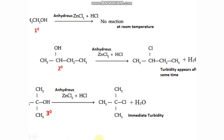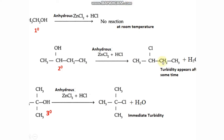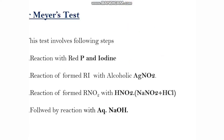So this is one of the tests used for distinguishing primary, secondary and tertiary alcohols. Next is Victor Meyer's test. Victor Meyer's test is based on the difference in behavior of nitroalkanes that are derived from primary, secondary and tertiary alcohols towards nitrous acid. This test involves the following steps.